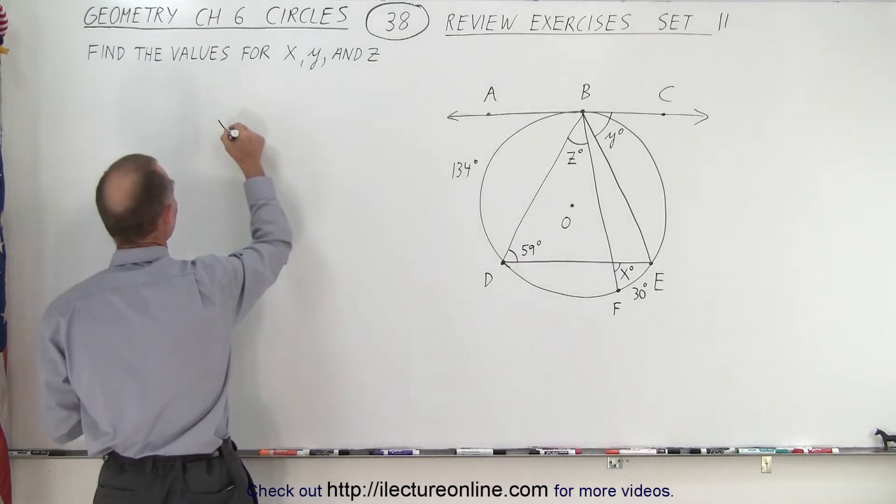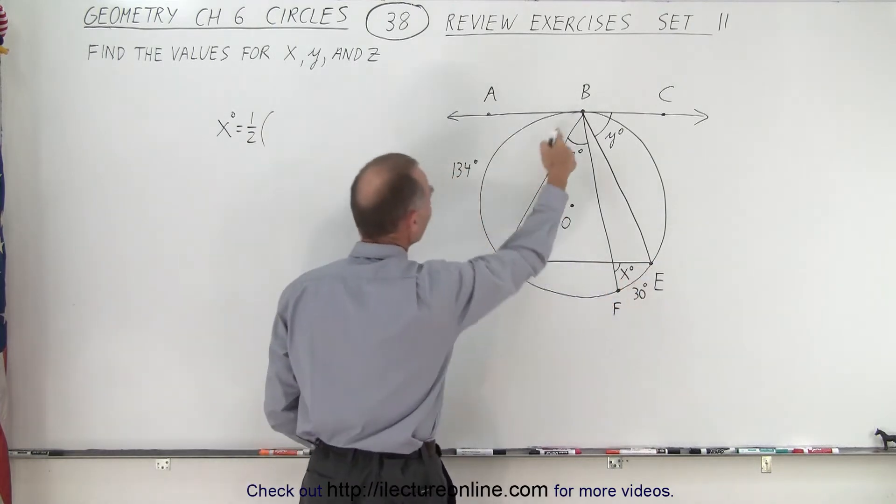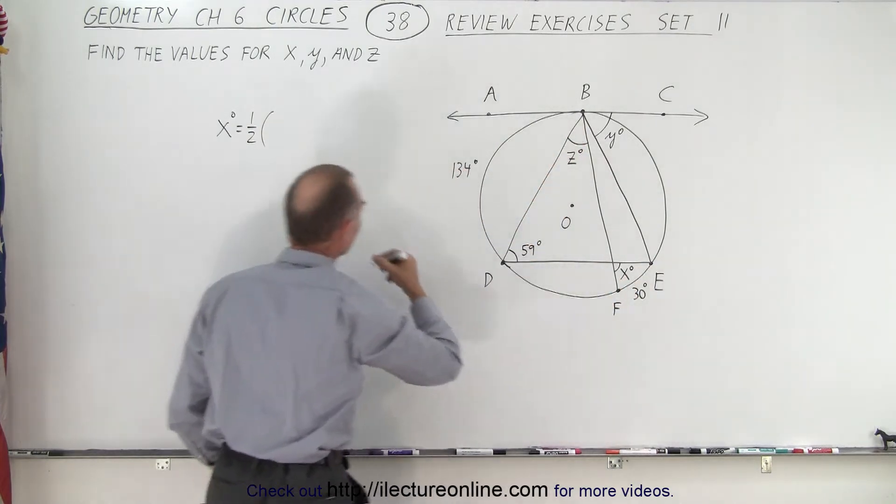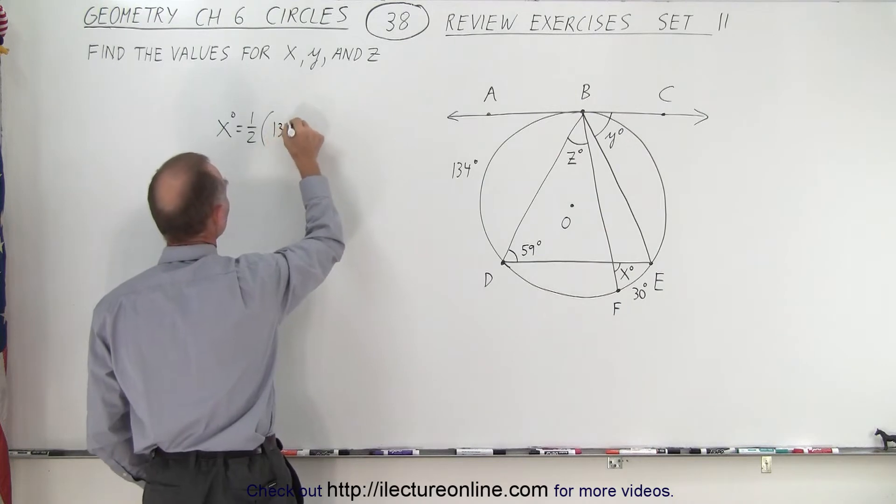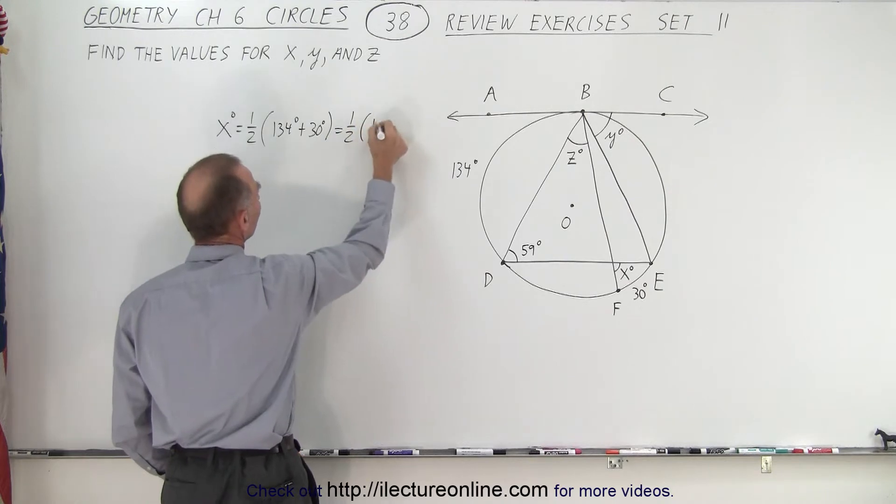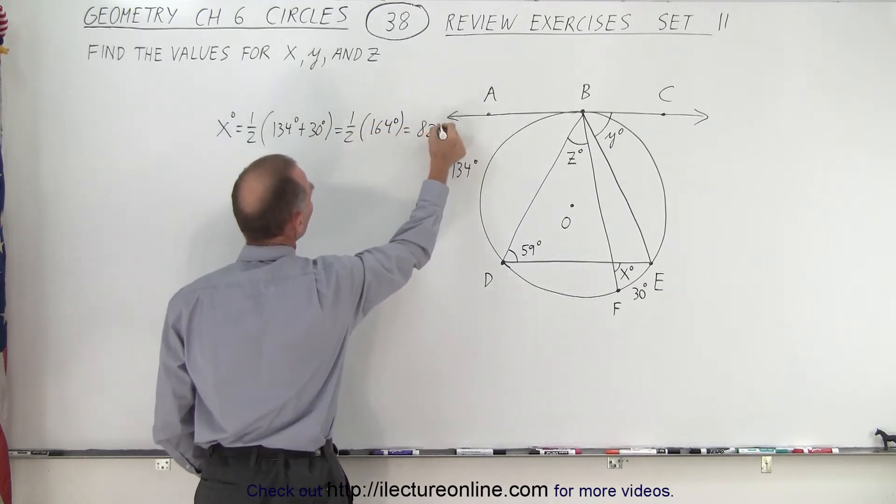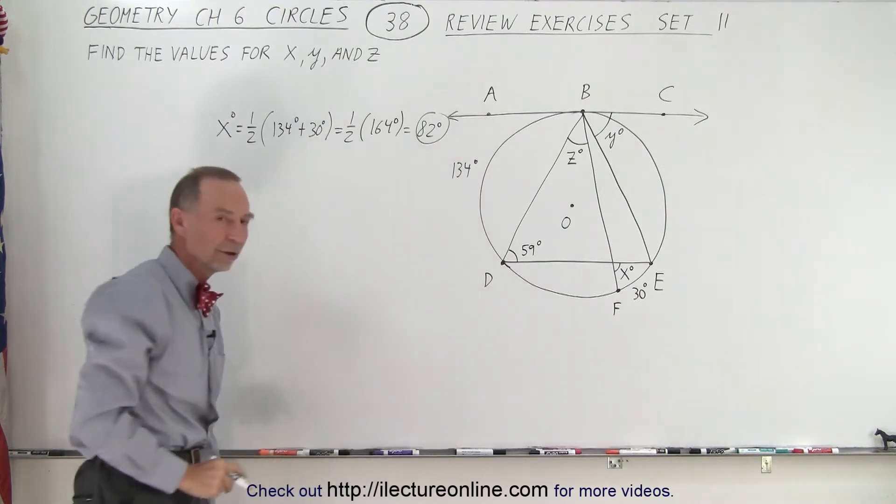What we can say here is that x degrees is equal to one-half the sum of the measure of the arc over here plus the measure of the arc over here. So it would be 134 degrees plus 30 degrees, which is one-half times 164 degrees, which is 82 degrees. And that is the result for x.